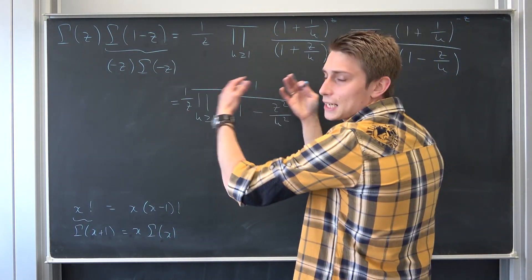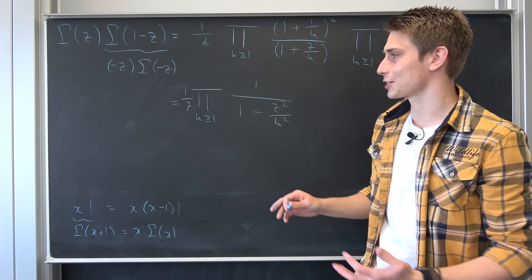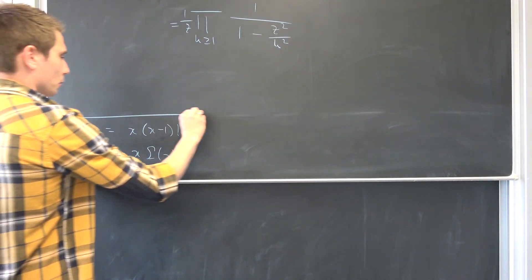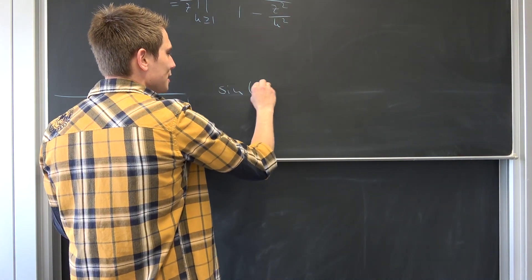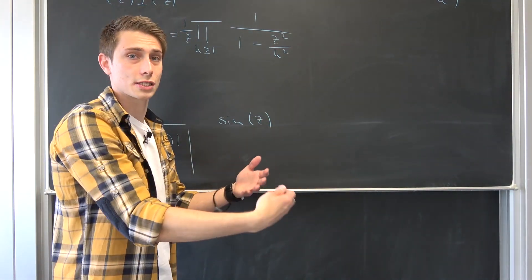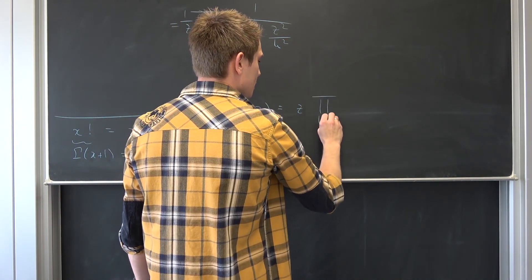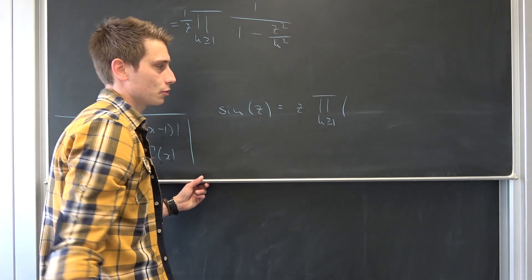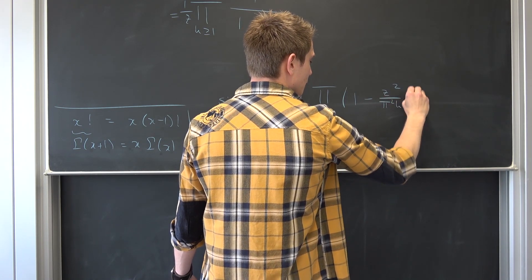Is this any good? Well, it's something, but we can make this way nicer and turn it into something really familiar. Consider the infinite product for sine: sine of z equals z times the infinite product over k ≥ 1 of (1 - z²/(π²k²)). This comes from factoring sine into linear factors at all its zeros.